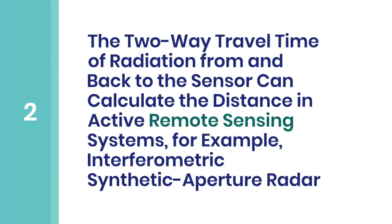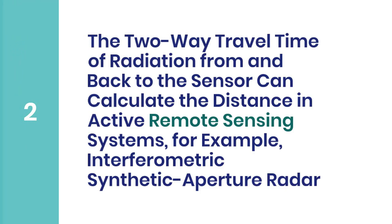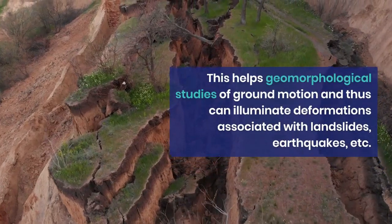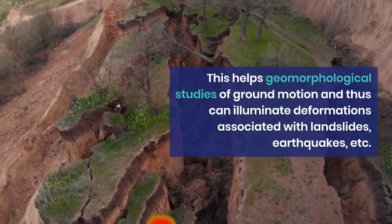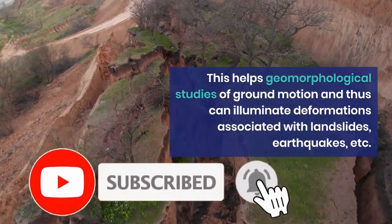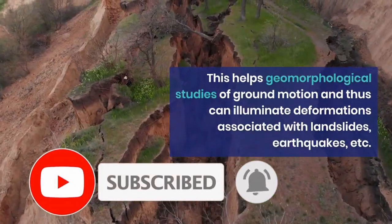The two-way travel time of radiation from and back to the sensor can calculate the distance in active remote sensing systems, for example interferometric synthetic aperture radar. This helps geomorphological studies of ground motion and thus can illuminate deformations associated with landslides, earthquakes, etc.